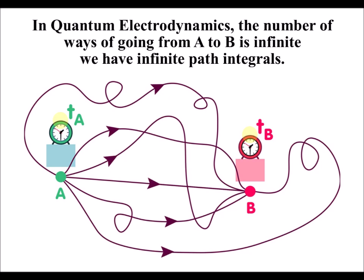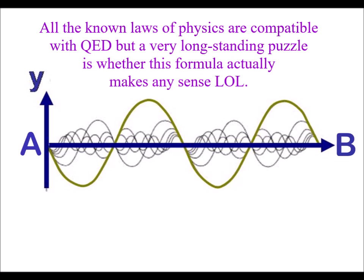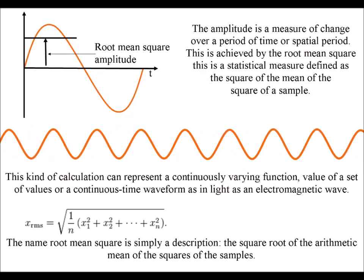Then what you do is add up all the phases for all of the paths, and that gives you the amplitude to go from A to B, and then you square it to get the probability.